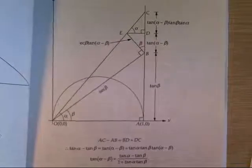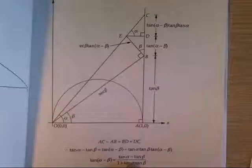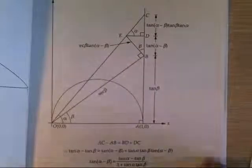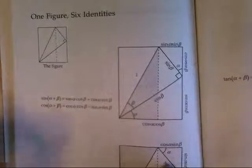So here we go. Here's the one I want to look at. This is one figure, six identities. And this is the guy with the name on the front, Roger B. Nelson. At least some of it's his.